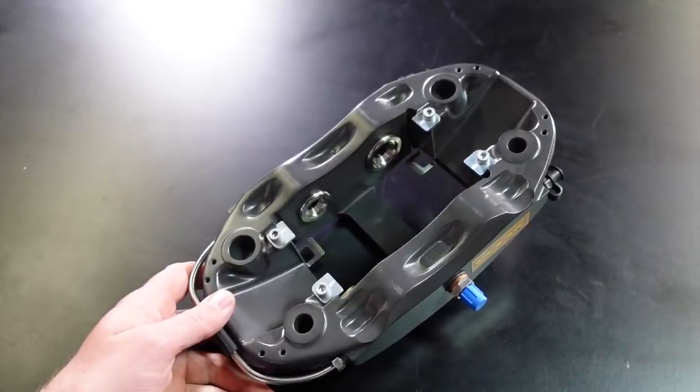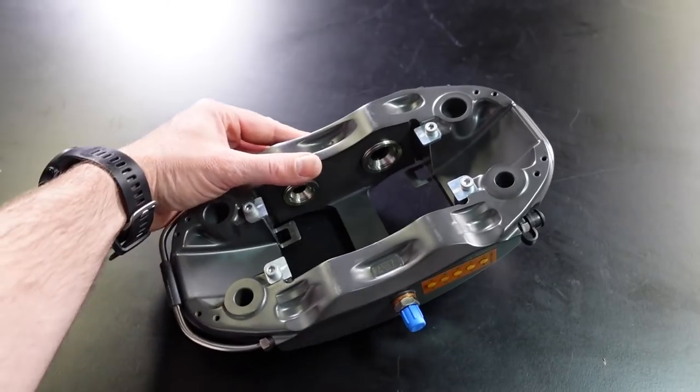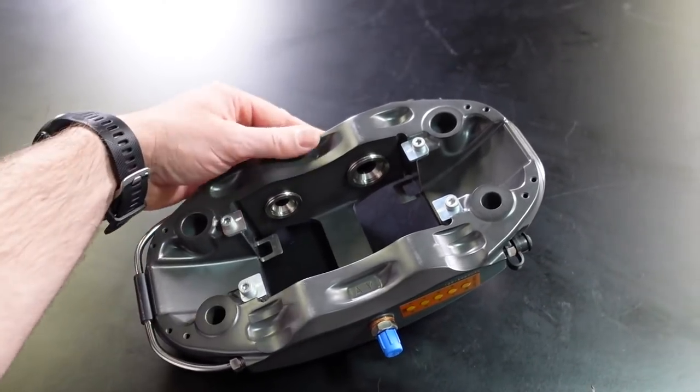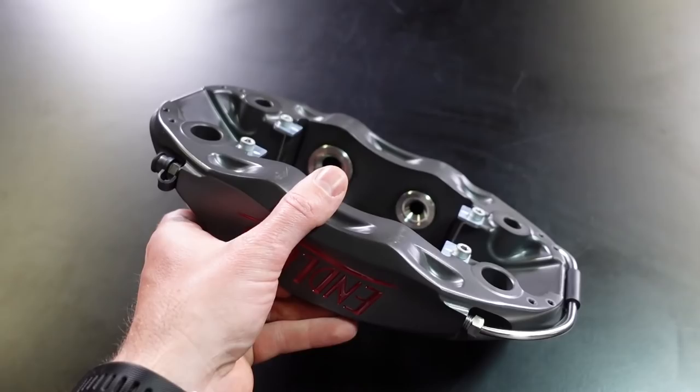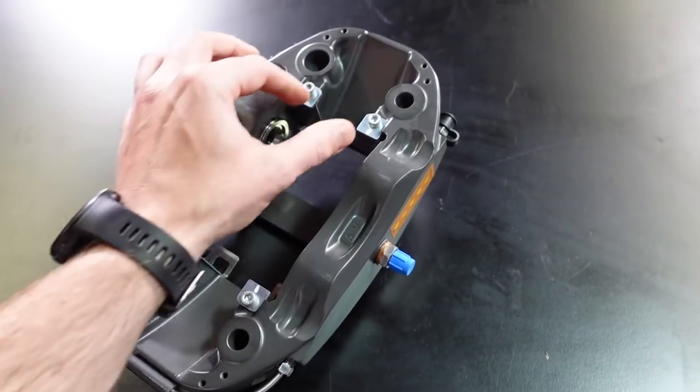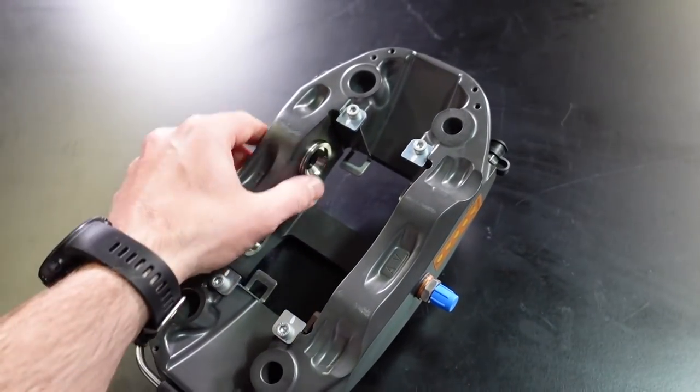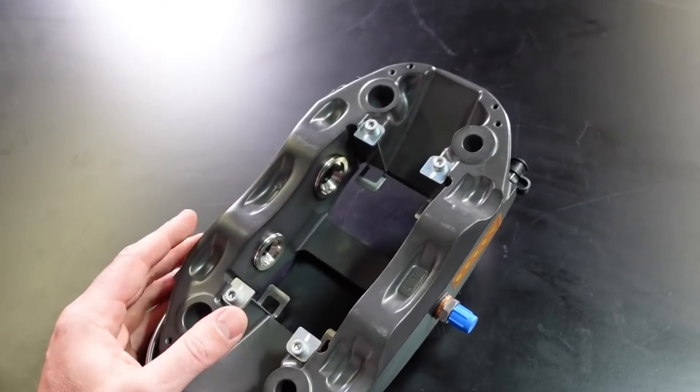This is an example of a pretty typical modern motorsport type brake caliper. This is a four piston caliper, so we have two pistons on this side and two on the other side, and the disc runs here down in the center section with the pads between the pistons and the brake disc.